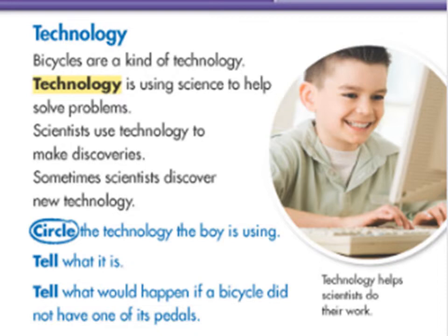Bicycles are a kind of technology. Technology is using science to help solve problems. Scientists use technology to make discoveries — sometimes scientists discover new technology. Now look at the picture. What do you think? The boy is using a kind of technology. Circle the technology the boy is using. Very good — the boy is using a computer.